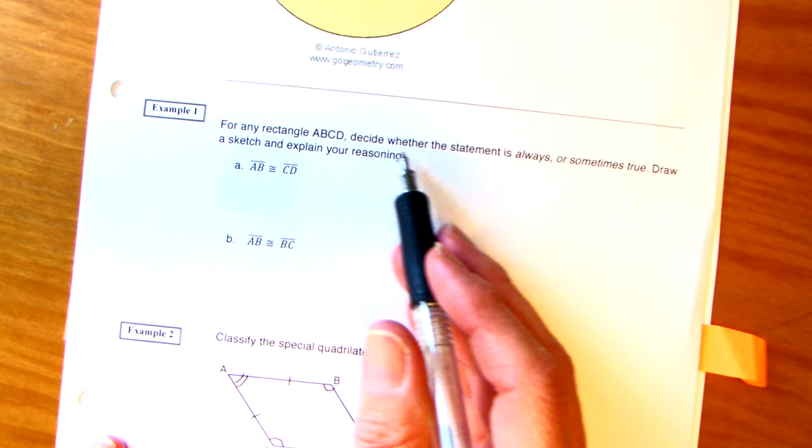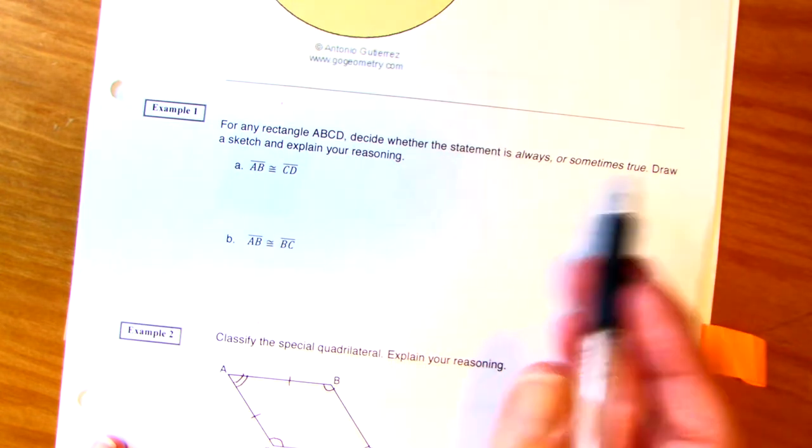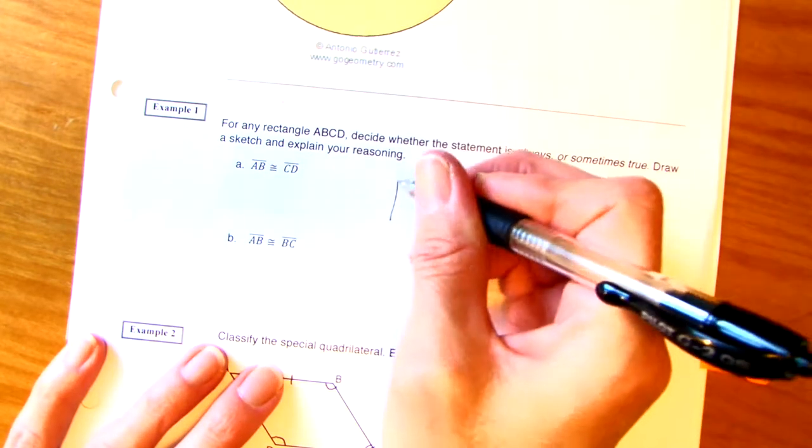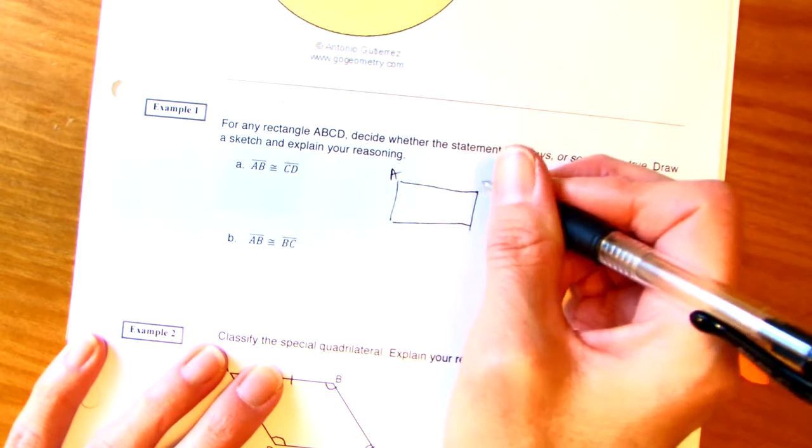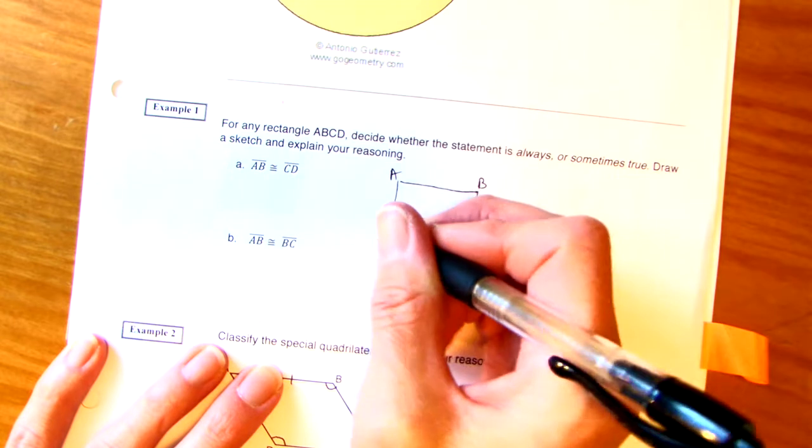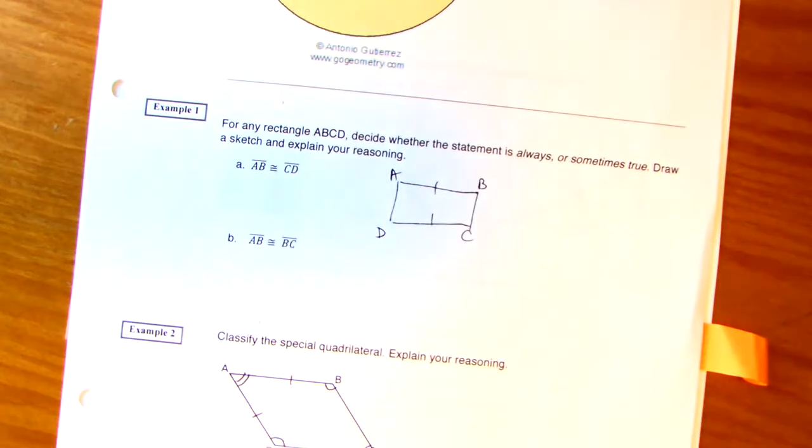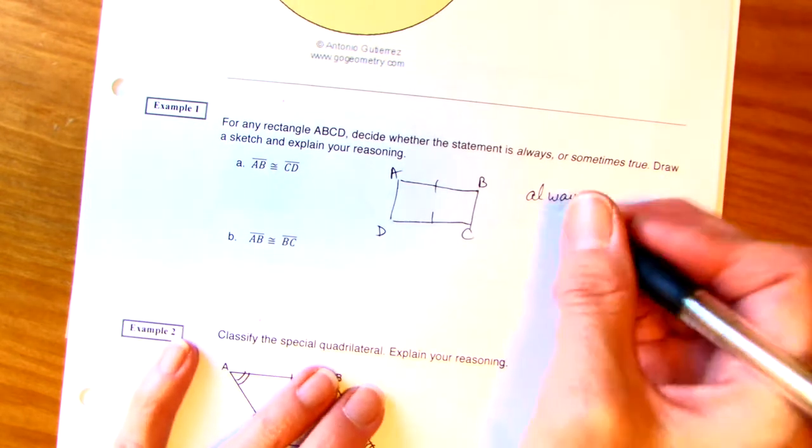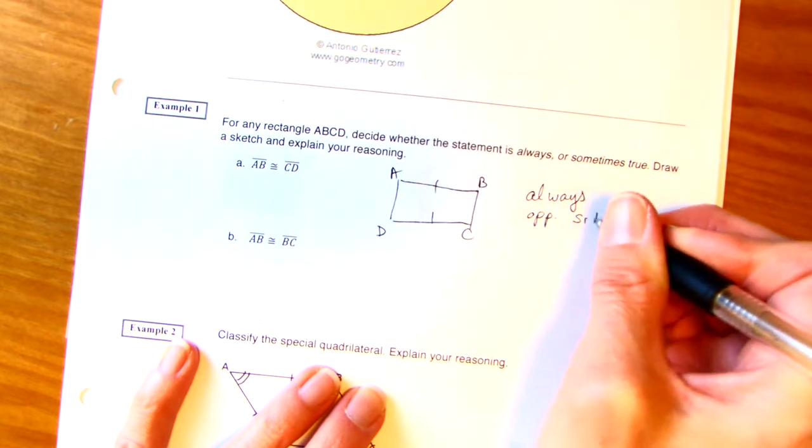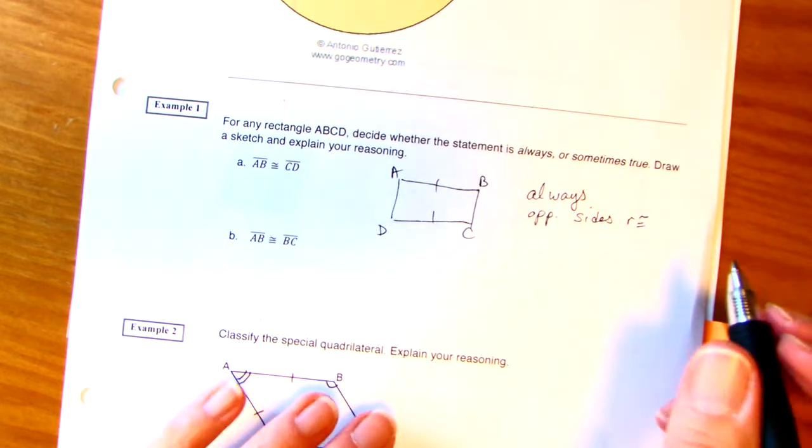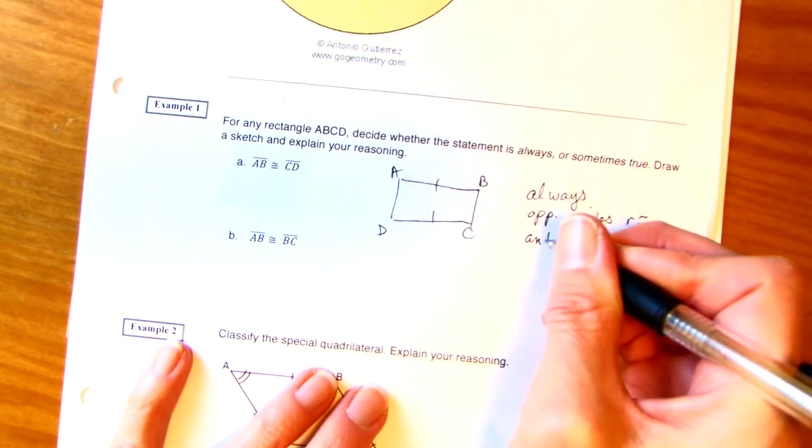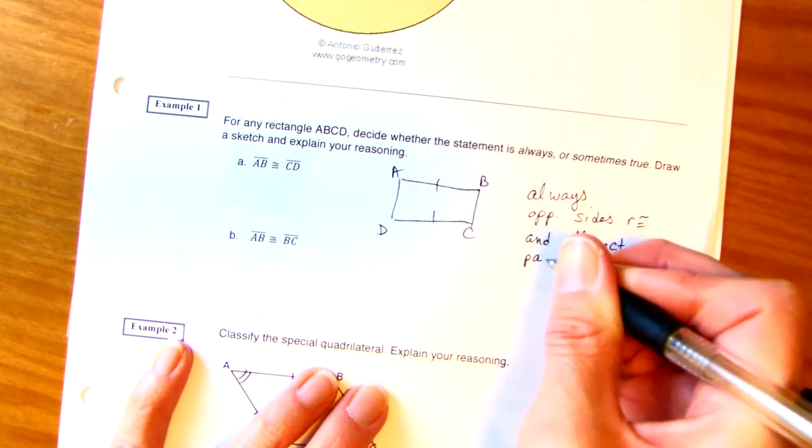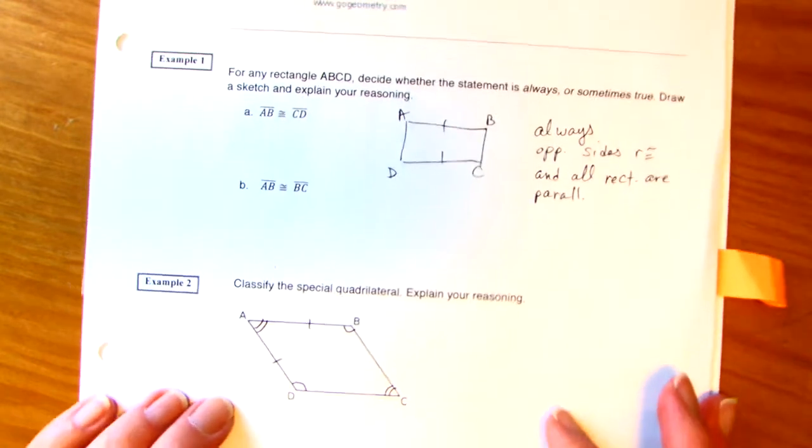For any rectangle ABCD, decide whether a statement is always or sometimes true. Draw a sketch and explain your reasoning. Let me draw something. We have A, B, C, D. And they're saying this. Now, is that always or sometimes true? Always. Why? Opposite sides are congruent and all rectangles are parallelograms.